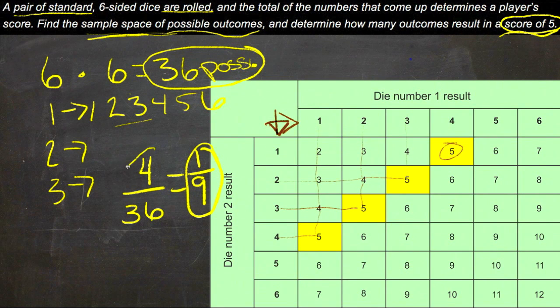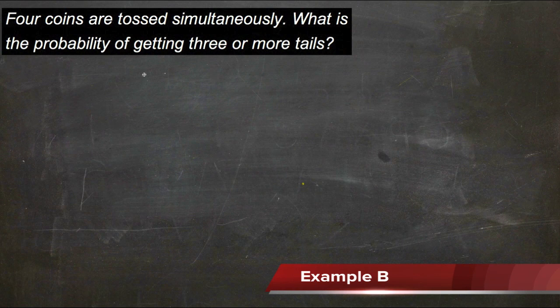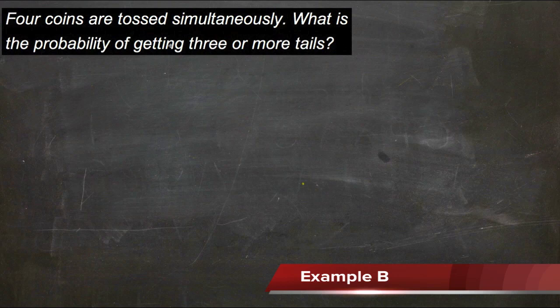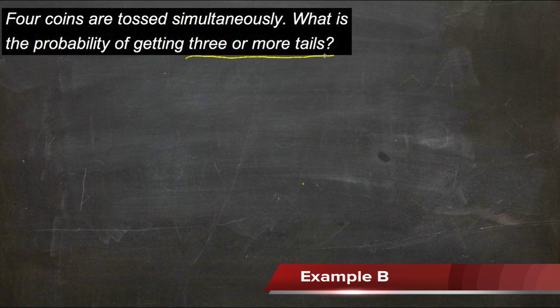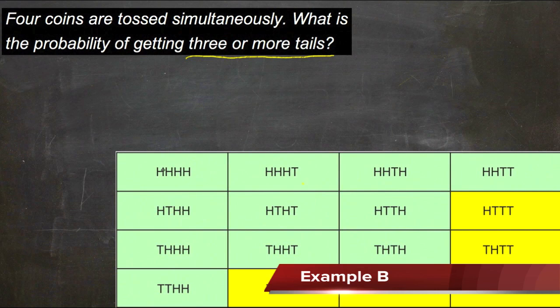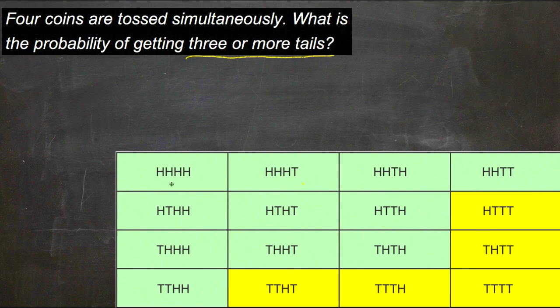Example B is really very similar. This question says that there are four coins tossed simultaneously and the question is what is the probability of getting three or more tails. What we're looking at here is all the possibilities of four coins. Either we have four heads or we end up with three heads and one tail, or two heads and a tail and then another head, and so on.